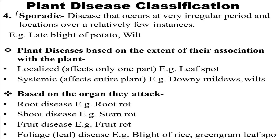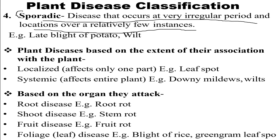The fourth type is sporadic — diseases that occur at very irregular periods and locations over relatively few instances, such as late blight of potato and wilting, caused due to changes in location over an abrupt period.